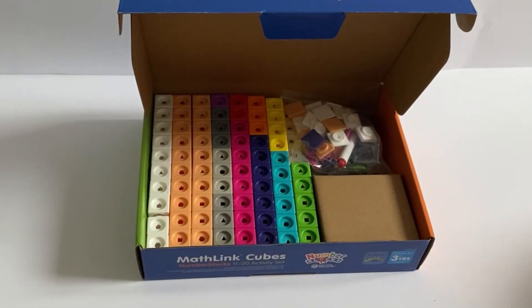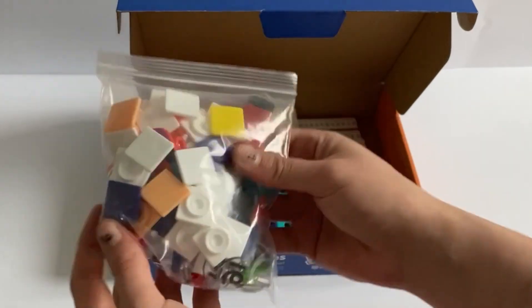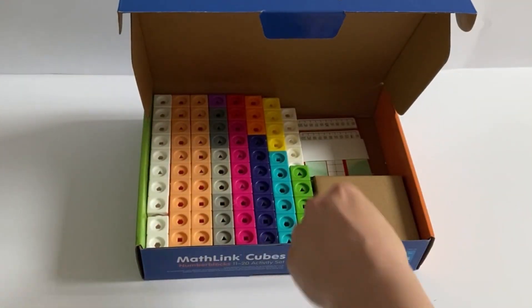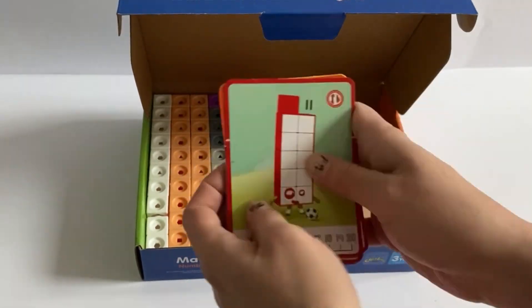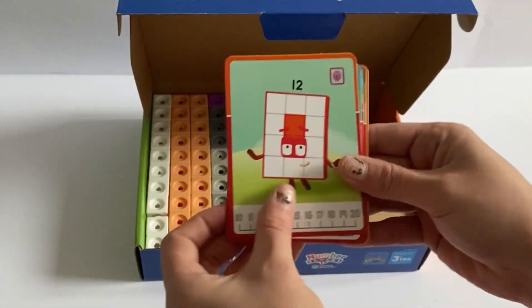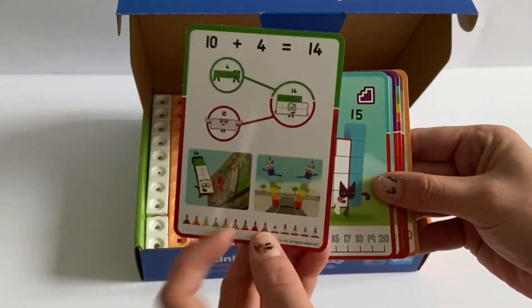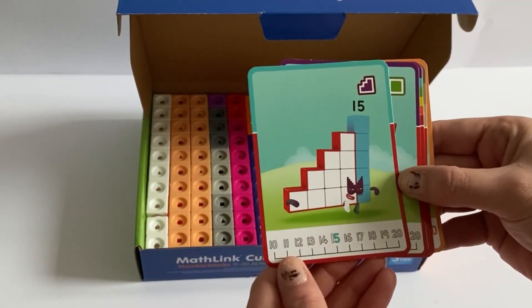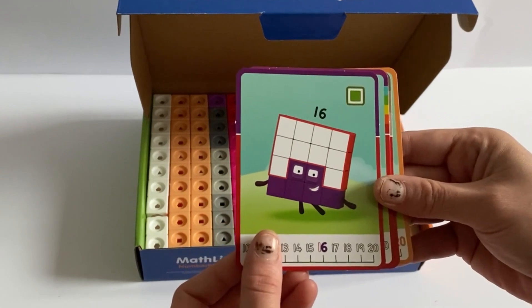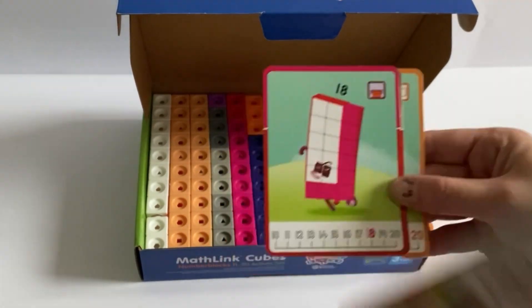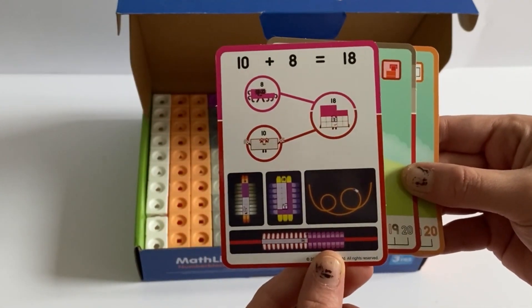Next up we have the bag of faceplates, the numberlings, and the set also comes with three accessories, which are number 20's hat and number 14's skateboard. The set also comes with a full set of flash cards, 11 to 20, which tell us fact files about the number blocks and what clubs they belong to.